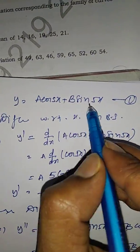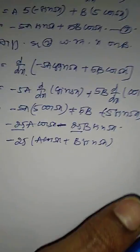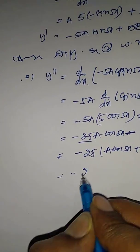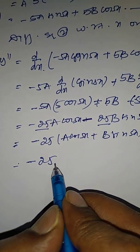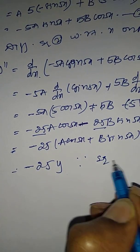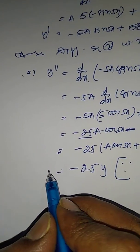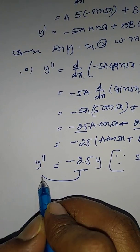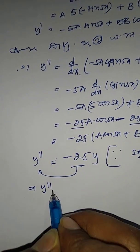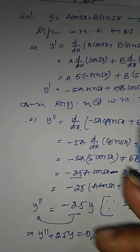From equation number one, a·cos(5x) + b·sin(5x) = y. So y'' = −25·(a·cos(5x) + b·sin(5x)) = −25y. Therefore, transforming: y'' + 25y = 0. This is the differential equation corresponding to the given family of curves.